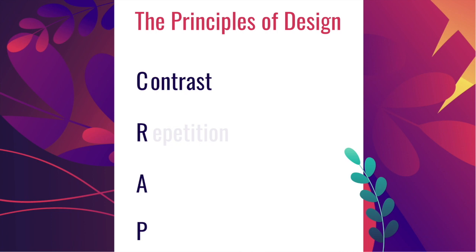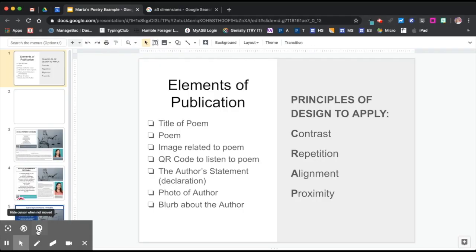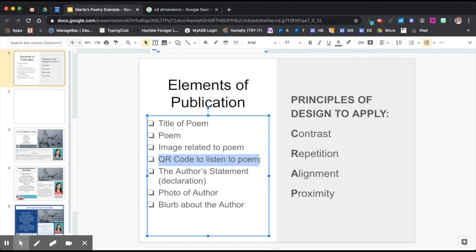So now you know the principles of design and can apply good contrast, repetition, alignment, and proximity to your future designs. Now it is time to start your design. You will find this template on Google Classroom, so please review the elements you need to include: the title, the poem, an image related to the poem, the author statement, a photo of the author, and the blurb. The QR code will be added at the end — you will record your poem and publish it via a QR code so people can scan and listen to you read your own poem. Please apply the principles of design we just learned.